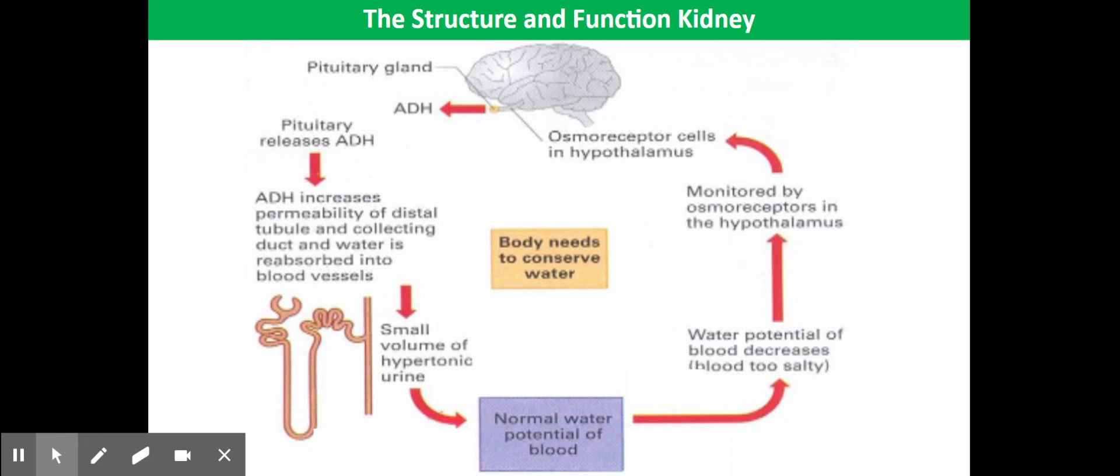Therefore more ADH is going to travel in the bloodstream to the kidney where it makes the walls of the collecting ducts more permeable to water. This means more water is going to be reabsorbed into the blood from the nephron, so you're going to have less water being lost from the body. You're going to end up producing a really small volume of concentrated urine.